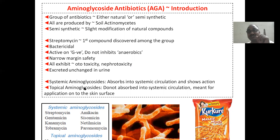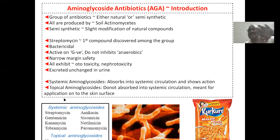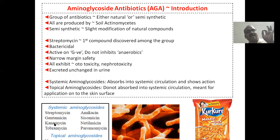Systemic aminoglycosides absorb into the systemic circulation to show their action. Whereas topical aminoglycosides do not absorb into the systemic circulation — they are meant for application onto the skin. This is called topical aminoglycosides — very, very important. From your Pharmacology Tripathi book: in the examination they will ask which are systemic and which are topical. Neomycin and framycetin are topical aminoglycosides. The remaining — streptomycin, amikacin, sisomicin, kanamycin, netilmicin — all these are systemic aminoglycosides.